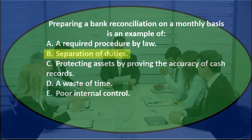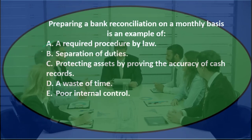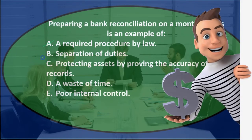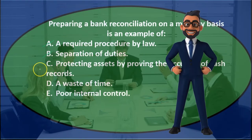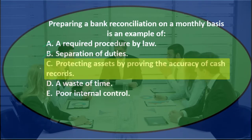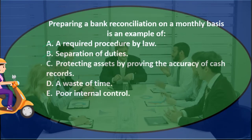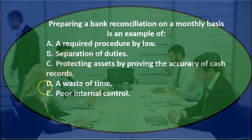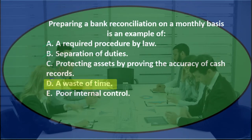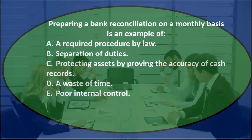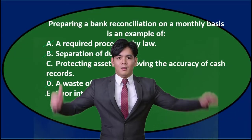B says separation of duties. Preparing a bank reconciliation — that's maybe a part of the separation of duties process, but I don't think it's separation of duties necessarily just to create the bank reconciliation. If we had a different person doing it and they were explaining that in the question, then it would be. C, protecting assets by proving the accuracy of cash records — that sounds reasonable. We are checking the cash records by doing the bank reconciliation. D says a waste of time, and probably not — we're not going to say as accountants it's a waste of time to reconcile. And E says poor internal controls, but a bank reconciliation probably adds to internal controls, so it would be good internal controls.